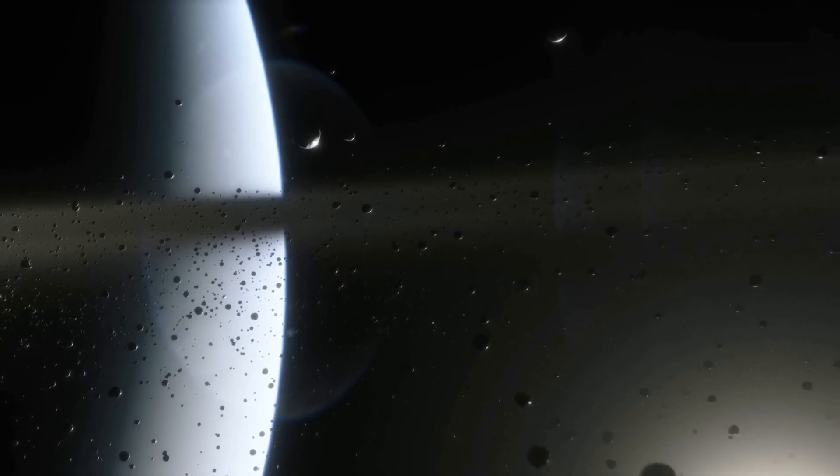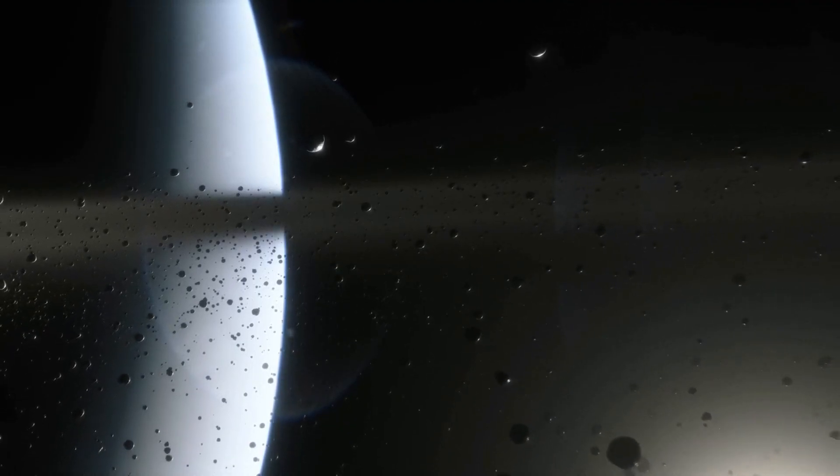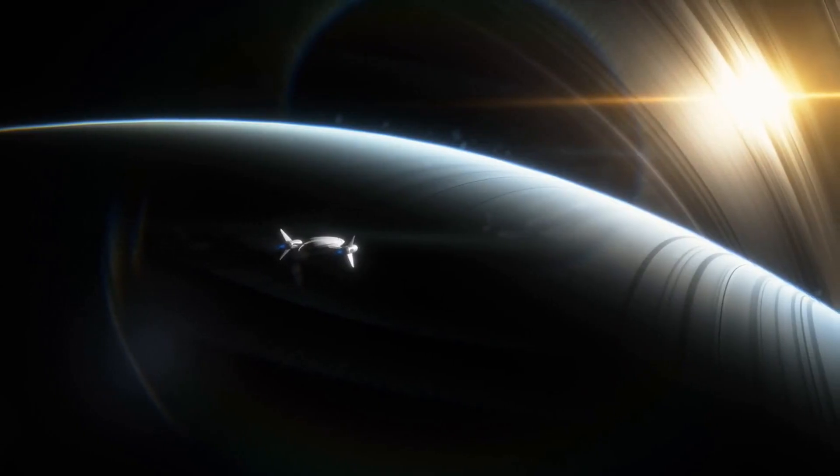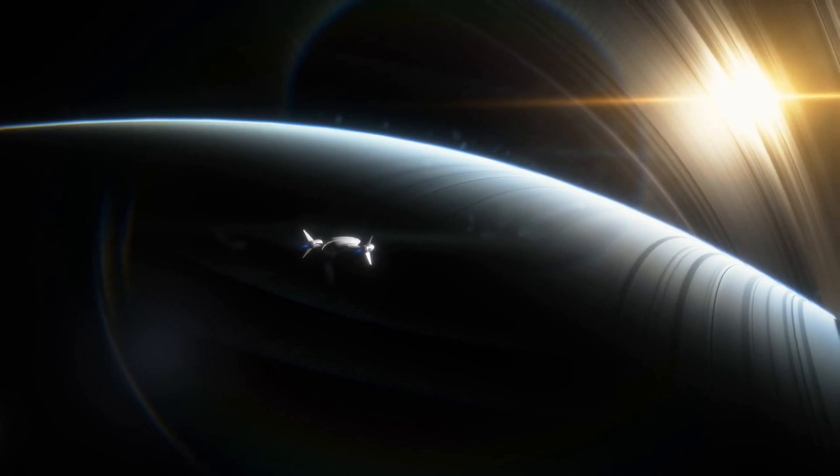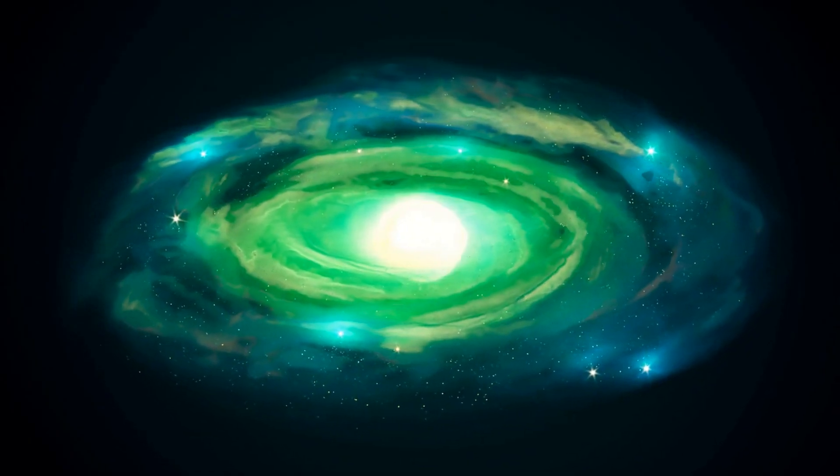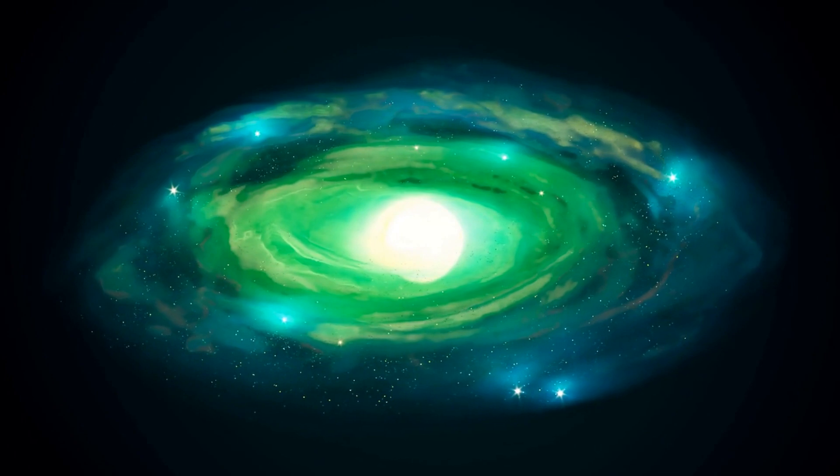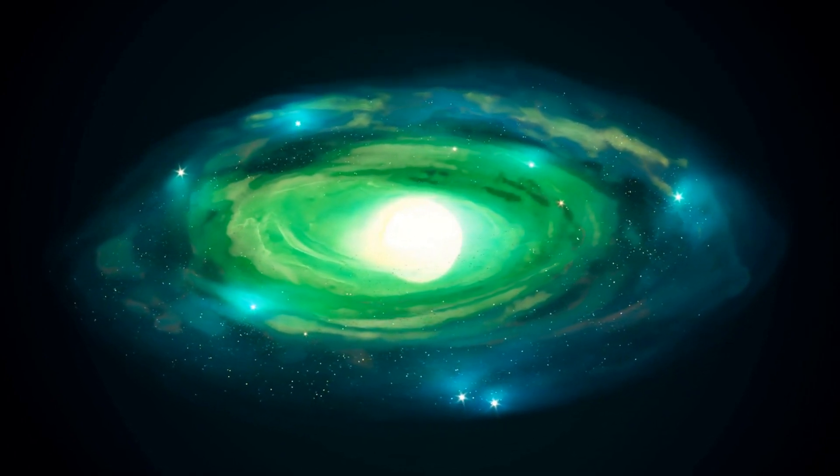Planets are large objects that orbit stars and have sufficient mass and gravity to form their own spherical shape. There are eight planets in our solar system, including Earth. Black holes are objects with an extremely strong gravitational field that form as a result of the collapse of stars.